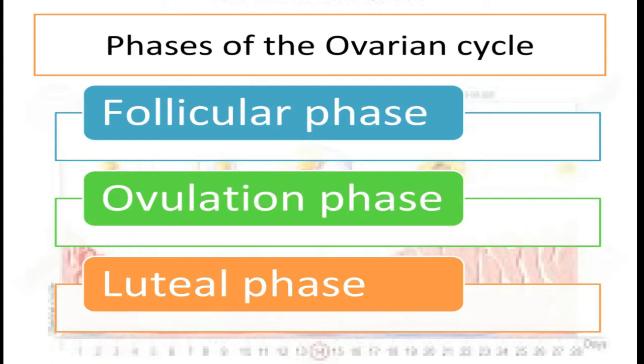Let's have a look at the ovarian cycle, which you are already familiar with. It is divided into three phases: follicular phase, ovulation phase, and luteal phase.